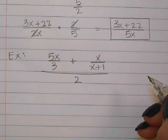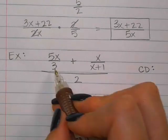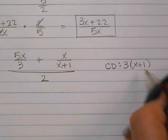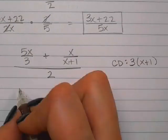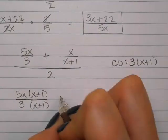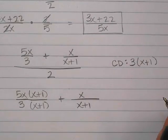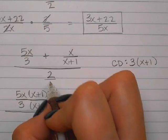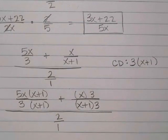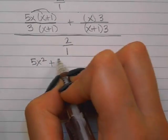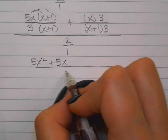We're going to start the same way we did with the other one — find the common denominator. Between 3 and (x plus 1), I need both of those. So I need a 3 out front and then the parentheses. For the first fraction, 5x over 3, I need an (x plus 1) on the top and bottom. For the second fraction, I have the (x plus 1) but I need the 3. On the top I have 5x squared plus 5x, over 3 times (x plus 1).